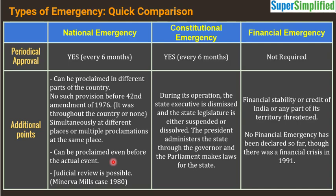Judicial review is possible in all three cases — all three types of emergency fall within the scope of judicial review. A famous case establishing this is the Minerva Mills case of 1980. During constitutional emergency or President's Rule, the state executive is dismissed and the state legislature is either suspended or dissolved. The President administers the state through the Governor and Parliament makes laws for the state. This is how the federal structure converts to a unitary one, which is what Dr. B. R. Ambedkar was describing.